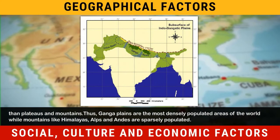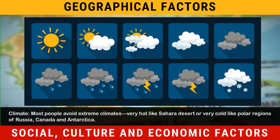Climate: Most people avoid extreme climates — very hot like the Sahara Desert, or very cold like the Polar Regions of Russia, Canada and Antarctica.